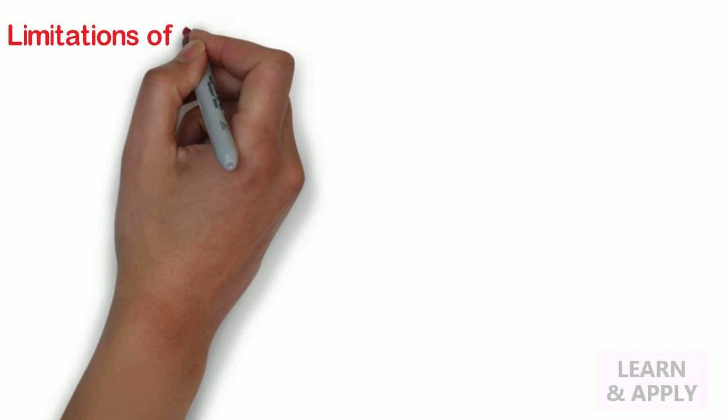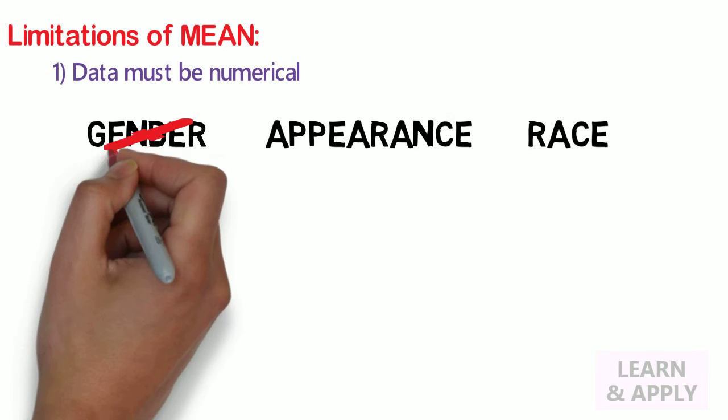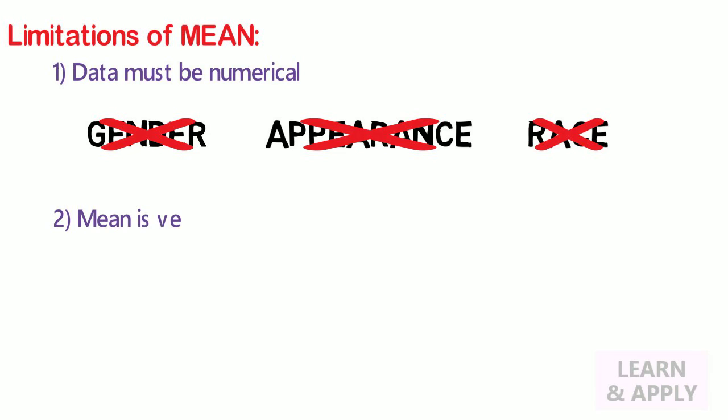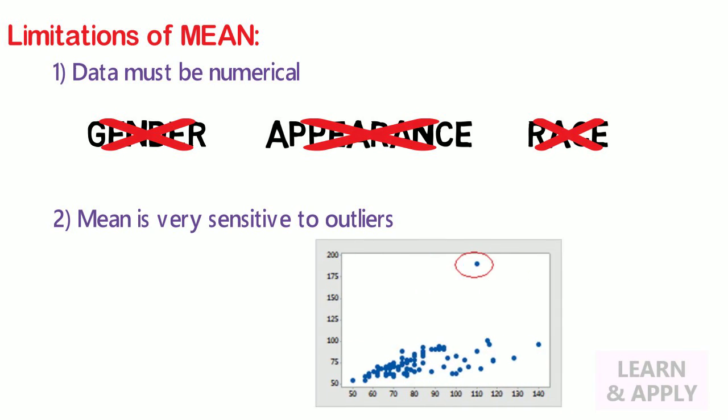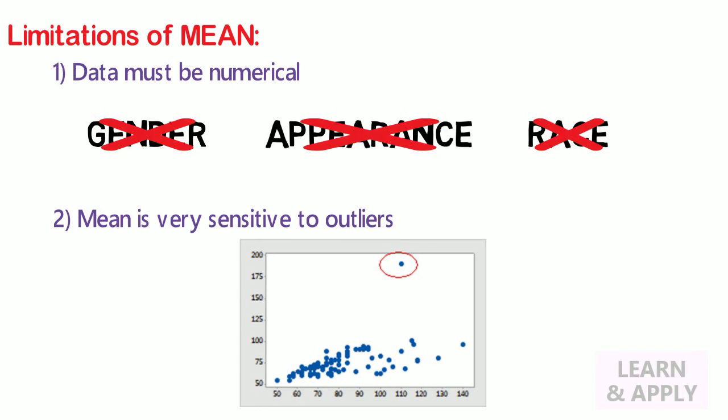However, it is having some limitations too. Like, one, in order to calculate the mean, data must be numerical. That is, we cannot use the mean when we are working with the data on characteristics like gender, appearance and race. Two, the mean is also very sensitive to outliers which are the numbers that are much higher or much lower than the rest of the data and thus it should not be used when outliers are present.